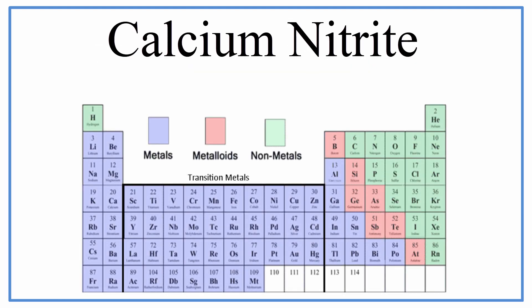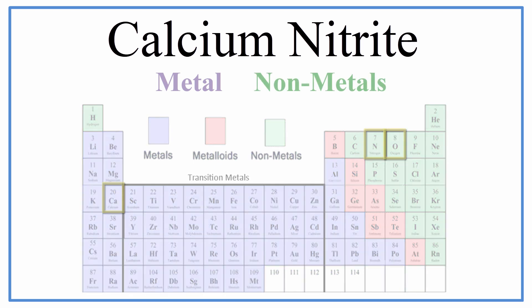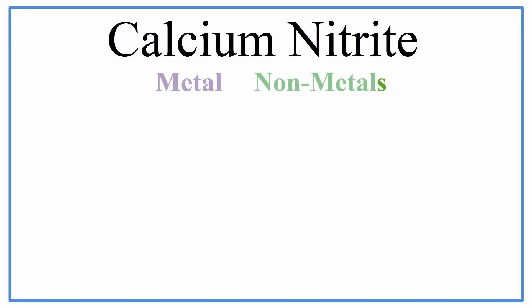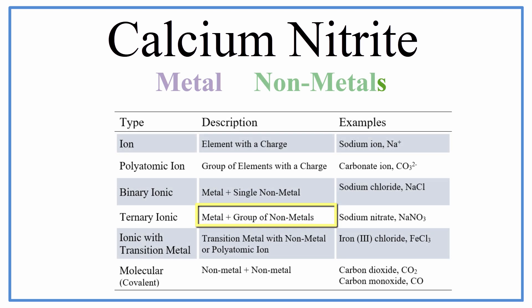The first thing we need to do is determine what type of compound we have. Calcium is a metal, and nitrate is a group of nonmetals. When we have a metal and a group of nonmetals, we have a ternary ionic compound.